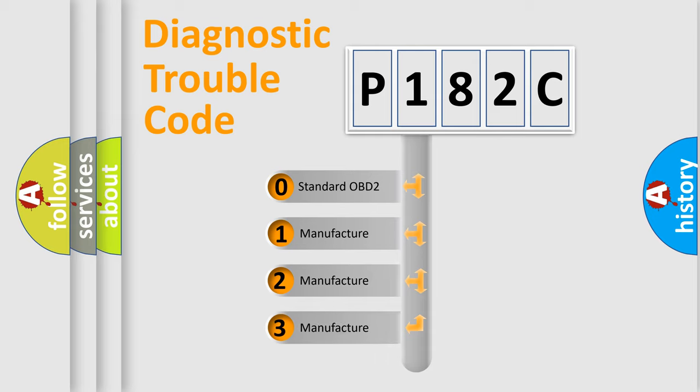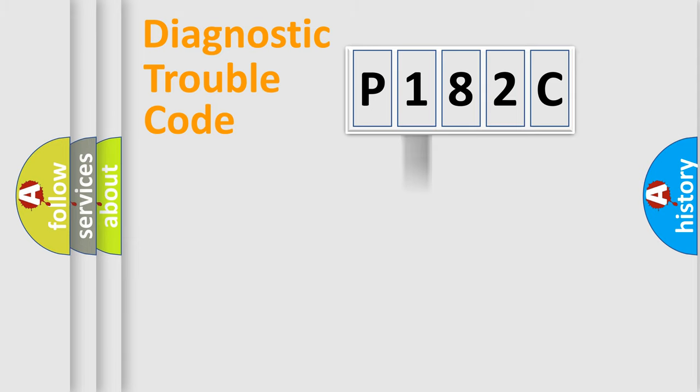If the second character is expressed as zero, it is a standardized error. In the case of numbers 1, 2, or 3, it is a more precise expression of the car-specific error.